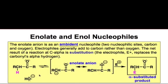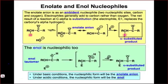Nucleophilic derivatives of the carbonyl group tend to be most reactive on the carbon alpha to the carbonyl carbon. This leads to a net substitution, typically, of a hydrogen atom alpha to the carbonyl group for some electrophile.